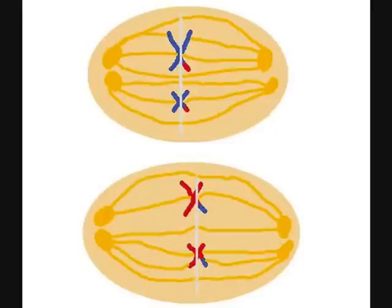During metaphase 2, the sister chromatids are aligned onto the metaphase plate, as they were in metaphase 1. The spindle fiber is complete and attached to either side of the sister chromatids.